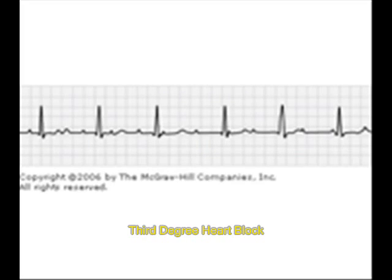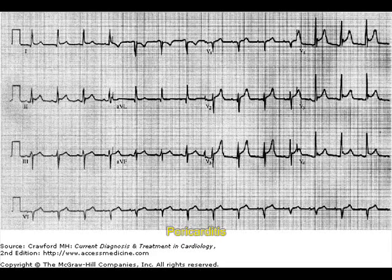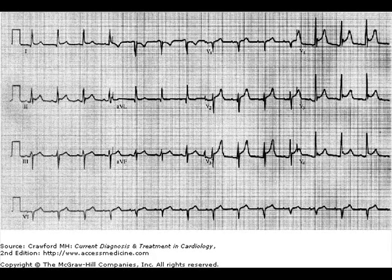And now you can see this is 3rd degree AV block. Both atria and ventricles contract differently — this is 3rd degree AV block. Now let us go to see some others. This is pericarditis. In pericarditis, you see diffuse ST segment elevation. You can see ST segment elevation in almost all leads, and the voltage is also less. This is characteristic of pericarditis.